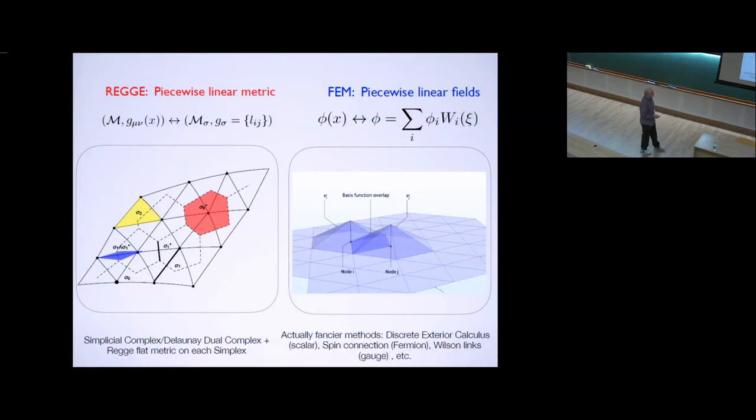The next thing you need to do is that since your lattice is not uniform, the simplicial or the regi approach is to always use simplexes, triangles in two dimensions, tetrahedrons in three dimensions, and so on. That has a great advantage.